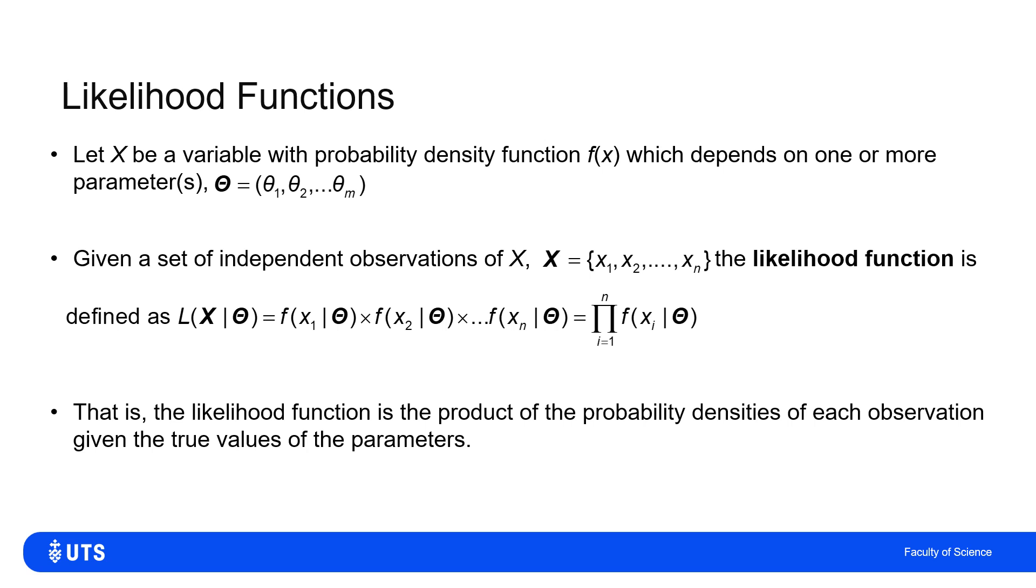So although I've defined this for continuous ones with a probability density function, maybe it's even a little bit more intuitive for discrete, where I just multiply the probability masses for each observation if I knew the true parameters.